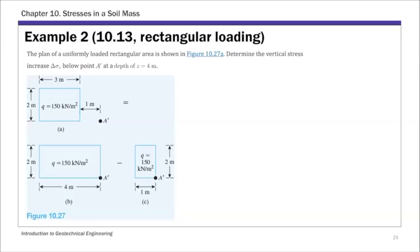The first thing I want to go over is Example 2, and we're going to calculate stress increase due to surface rectangular loading. This example has a 3 by 2 rectangle — that's the size of the original rectangular load at the surface.